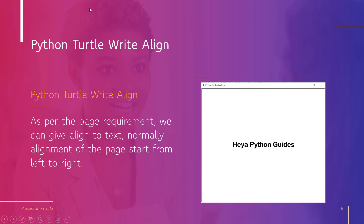Now let's discuss about Python Turtle Write align. As per the page requirement, we can give alignment to the text. Normally, alignment of the page starts from left to right. If we want to change the alignment, then we can give text align center or align right — then the page starts from the center to right or right to left.